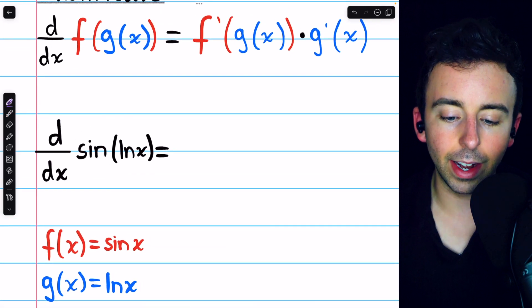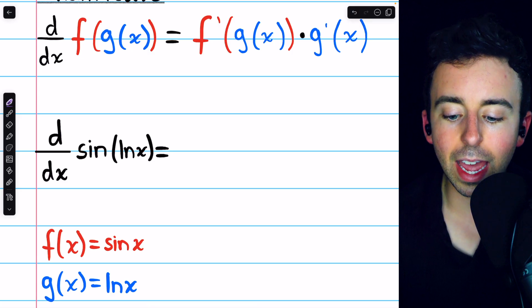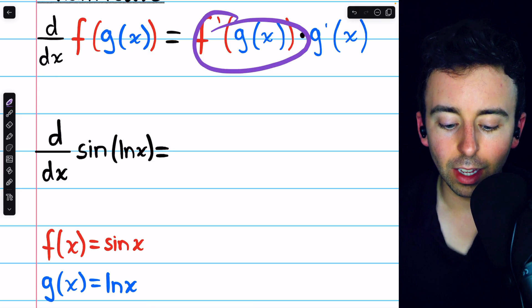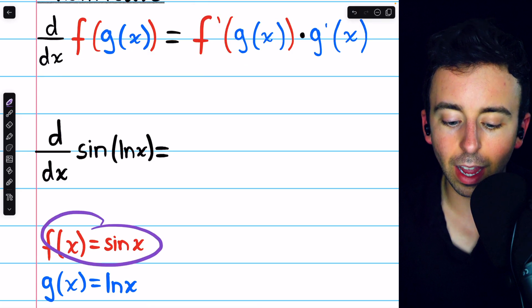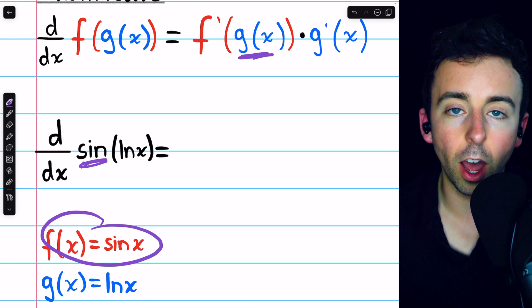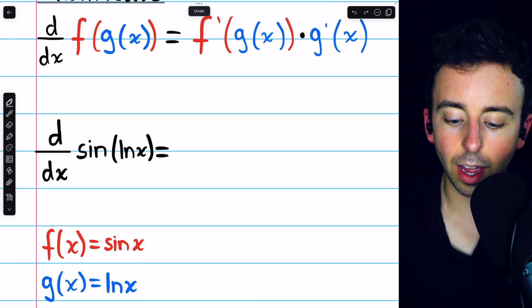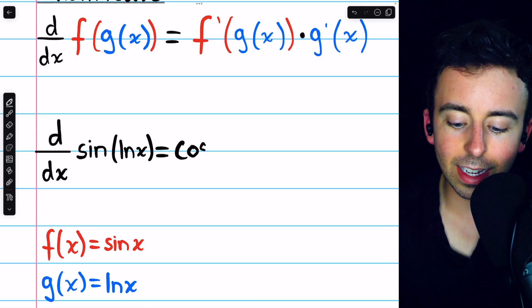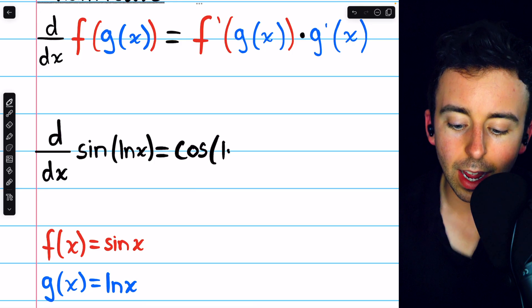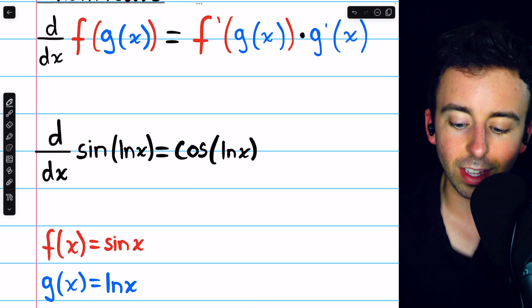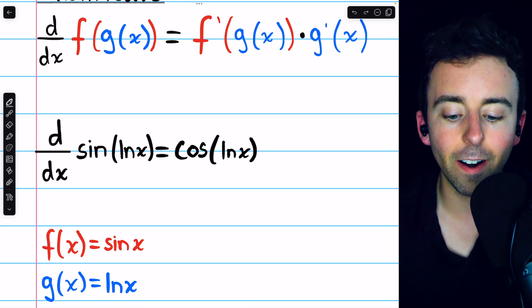So with that said, let's go ahead and apply the chain rule. We begin with f prime of g, so take the derivative of the outside function, leaving the inside function unchanged. f, the outside function, is sine, and its derivative is cosine. And then remember to not change the inside function, so just leave the ln(x) there.